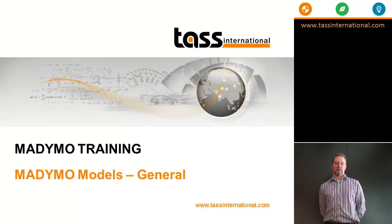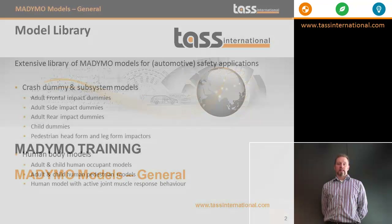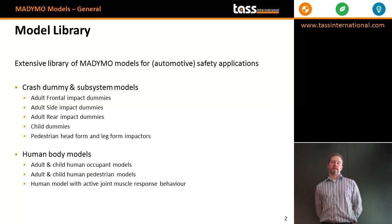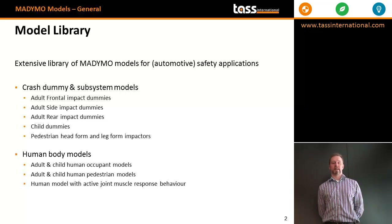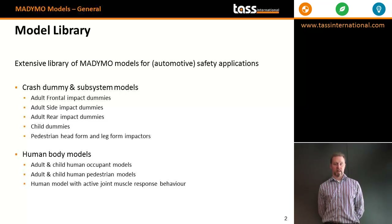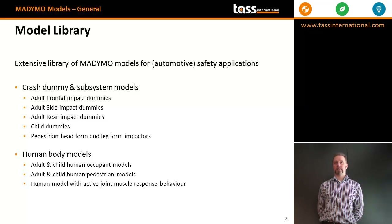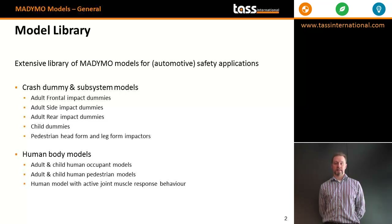Welcome to the training about Madimo dummy models. Madimo has an extensive library of models for various automotive and other safety applications, including crash dummy and subsystem models for frontal impact, side impact, rear impact, child dummies, and pedestrian head form and leg form impactors. In addition, we also have human body models of adult and child occupants, adult and human pedestrian models — also scalable — and an active human model with a muscle response behaviour model.